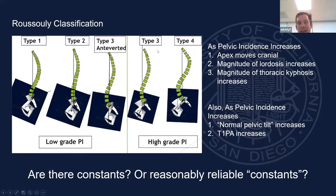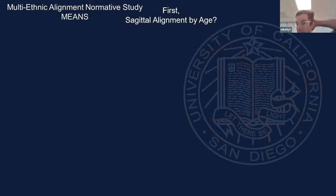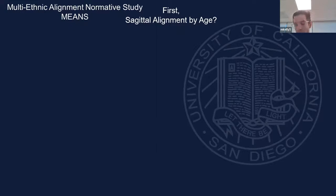We performed the multi-ethnic alignment normative data study called MEANS, getting volunteer asymptomatic patients from five continents — lots of different ethnicities and ages. I ran through that normative data and removed all people with any degeneration, because any degeneration leads to segmental lordosis loss which is, by definition, some deformity. The question of when does degenerative become deformity is a silly dichotomization. You've got to get the alignment right the first time before you set them up for failure.